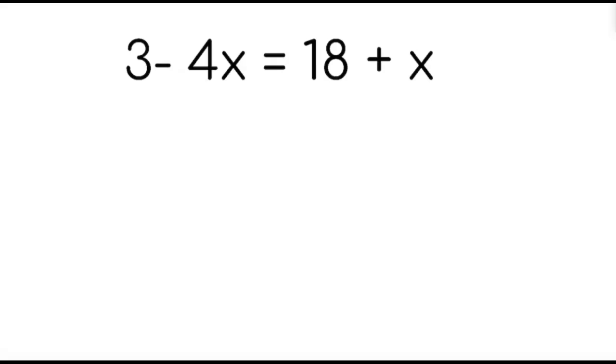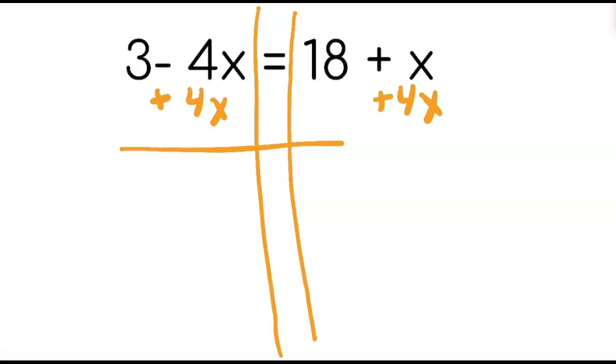Like always we start by drawing the railroad tracks and then we have to decide which way do we want to move things. So because I see a positive x on the right side I'm going to move the negative 4x over to the right. So I'm going to do opposite by doing positive 4x and balance positive 4x. Now I can combine my like terms. This ends up being zero. So all I'm left with on this side is 3 equals 18 plus 5x.